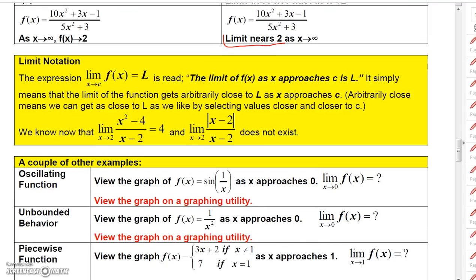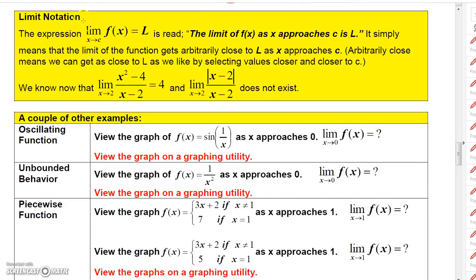Let's talk about the limit notation — this is how we express a limit. We write the limit of f of x equals L. If the limit exists, we generally call it L if we don't know the number. f is some function, and we're evaluating the limit as x approaches some number c. This is read: the limit of f of x as x approaches c is L. It simply means that the function gets arbitrarily close to L as x approaches c. Arbitrarily close means we can get as close to L as we like by selecting values close enough to c.